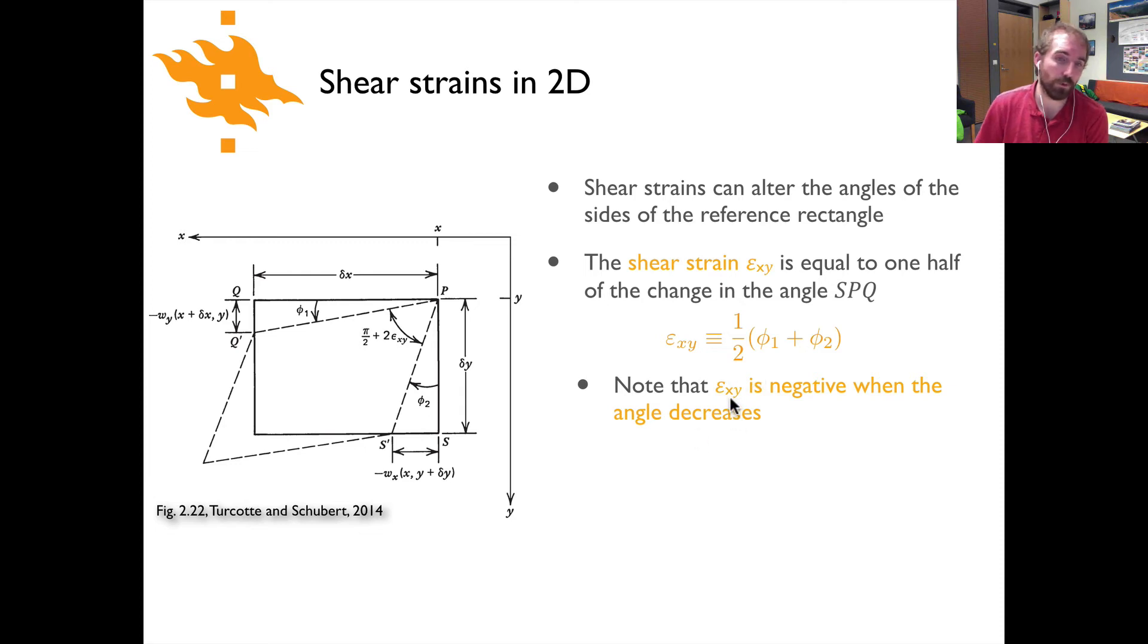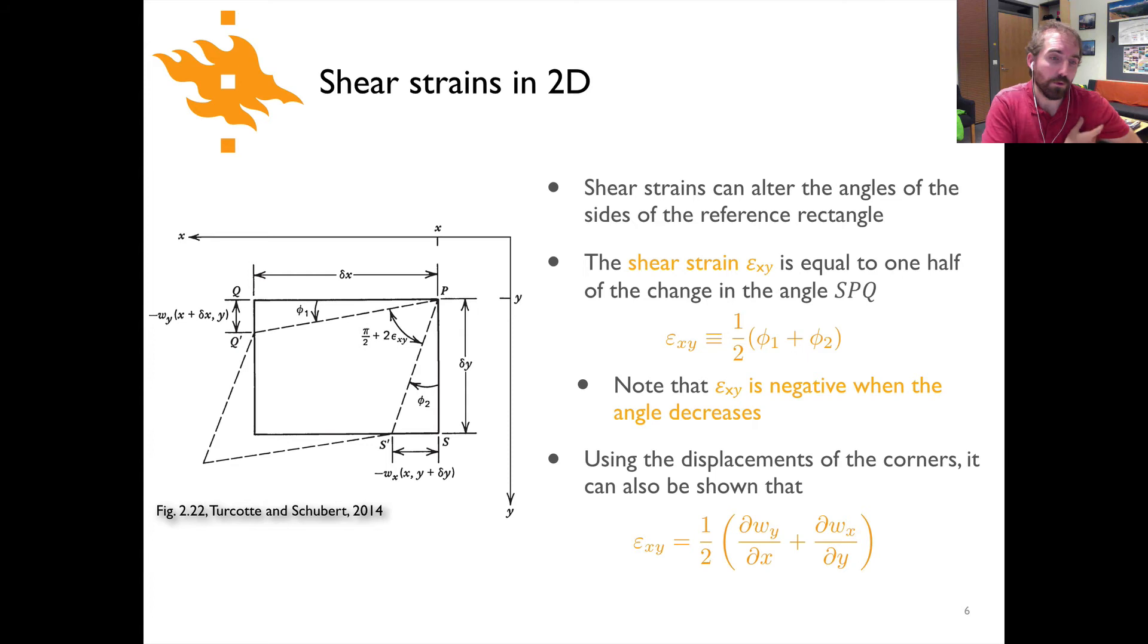And here just worthwhile to note that epsilon_xy is going to be negative when this angle decreases like it has here. If you were to go through and do this just for the sake of the mathematical exercise, you can do exactly the same kind of calculation we did before with displacements of the corners. And you can show yourself that epsilon_xy can also be shown to be equal to one half dw_y dx plus dw_x dy. And the Turcotte and Schubert book again goes through the full derivation of that calculation. If you're curious about where it comes from, I'm just putting it here for the sake of completeness.